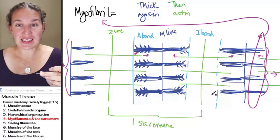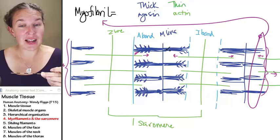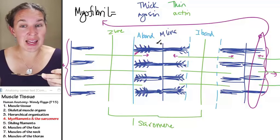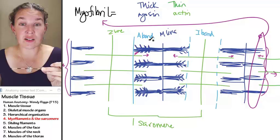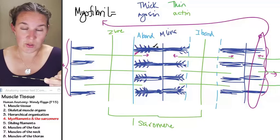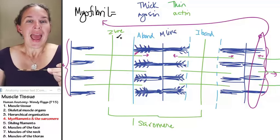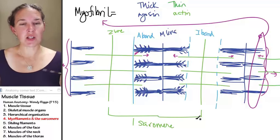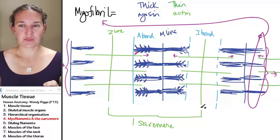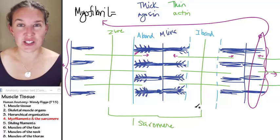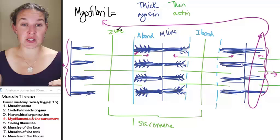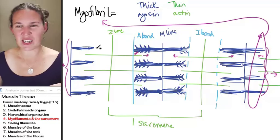So the light I band is made all of actin, and the dark A band is made all of myosin. From Z line to Z line we have one sarcomere. I drew one complete sarcomere, from Z line to Z line.